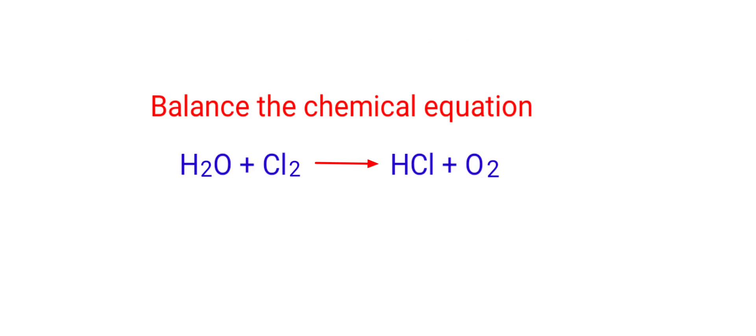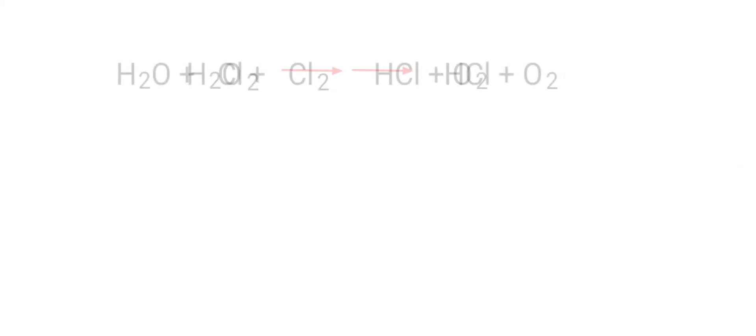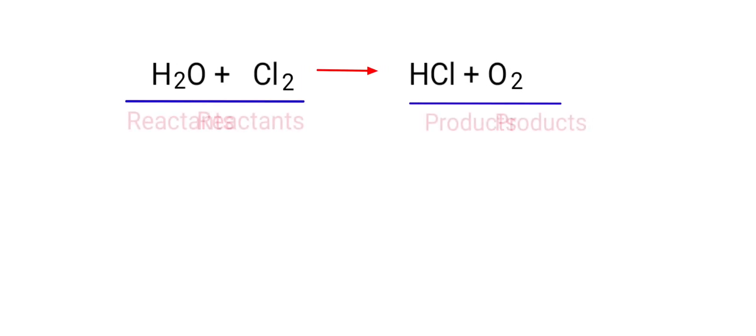Here is the chemical equation: water plus chlorine gives us hydrogen chloride plus oxygen. In this equation, the reactants are water and chlorine, and the products are hydrogen chloride and oxygen.